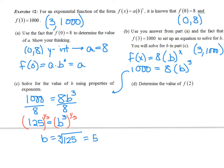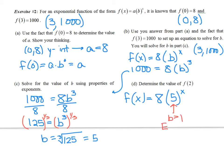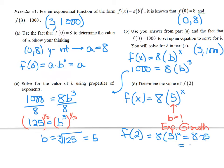Now that we have our a and b values, the exponential equation is f(x) equals 8 times 5 to the x power. The 8 stands for the y-intercept, and the 5 stands for the multiplier. Since b is greater than 1, this represents exponential growth. For part d, to find f(2), we compute 8 times 5 squared — do your exponents first — so 8 times 25 equals 200. Therefore f(2) equals 200.